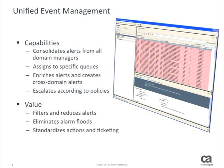CASOI integrates alerts from all of your monitoring tools, which helps eliminate chaos from alarm storms that burden operations teams. This gives Operations Level 1 a single pane of glass to manage all the alerts from all your technology monitoring tools, so that they can detect, query, and correlate critical cross-domain events and move them into specific queues.